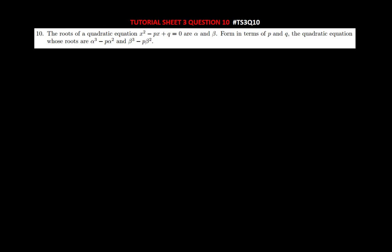So question 10 is saying the roots of a quadratic equation are alpha and beta, and then form, in terms of p and q, the quadratic equation whose roots are alpha cubed minus p alpha squared, and the other root is beta cubed minus p beta squared.